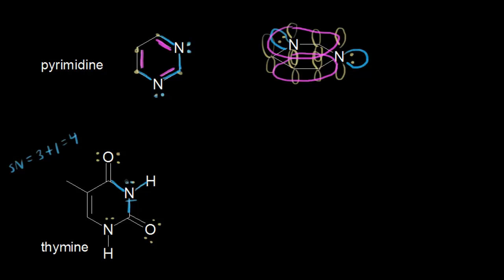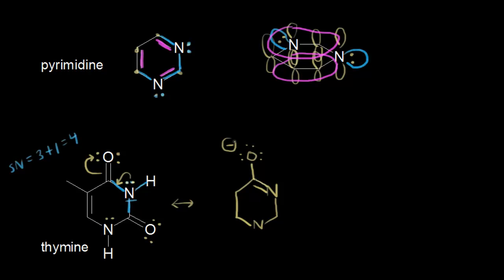The lone pair of electrons on that nitrogen is actually delocalized, not localized, meaning we can draw a resonance structure for thymine. That lone pair can move in to form a pi bond between the nitrogen and the adjacent carbon, which pushes the electrons on that carbonyl oxygen off onto the oxygen. So let's draw the resonance structure: the lone pair moved in to form a double bond between that nitrogen and that carbon. The top oxygen, which had two lone pairs, picks up one more, giving it a −1 formal charge.